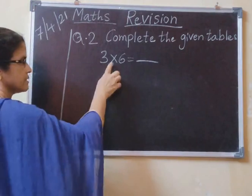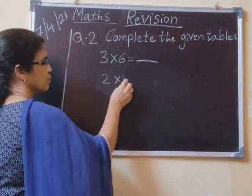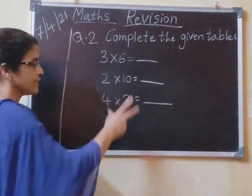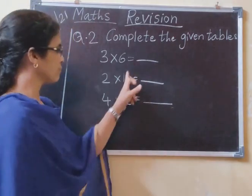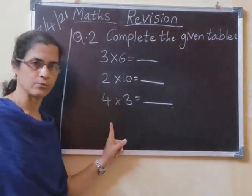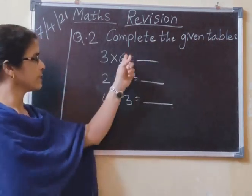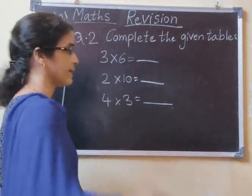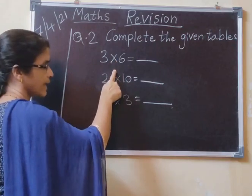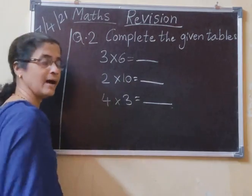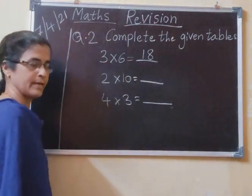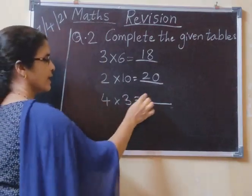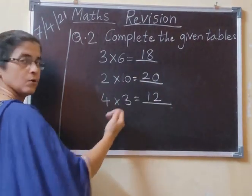3 times 2 is 6. 3 times 6. 2 tens are 20. 4 threes are 12. This is my example. Complete the given table. So 3 sixes are 18. For this, you have to say the table: 3 ones are 3, 3 twos are 6, 3 threes are 9, 3 fours are 12, 3 fives are 15, 3 sixes are 18. 2 tens are 20. Say the table and write down the answer. 4 threes are 12. Tables will help you get the answers.